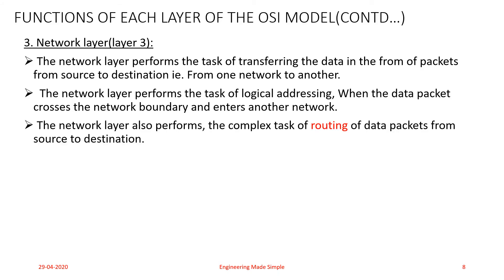Other responsibilities of the Network layer include logical addressing and routing. Physical addressing, implemented by the Data Link layer, handles addressing locally. If the packet passes the network boundary and travels to another network, we need another addressing system to distinguish source and destination systems. The Network layer adds a header to the packet that includes, among other things, the logical address of the sender and the receiver.